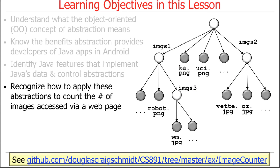I'll show you some examples of these things in the context of this image counter app, which is a heavily stripped down version of the assignment that you'll be working on all semester. This is stripped down because all it does is it goes through some root in a tree-structured, recursively structured tree folder directory.